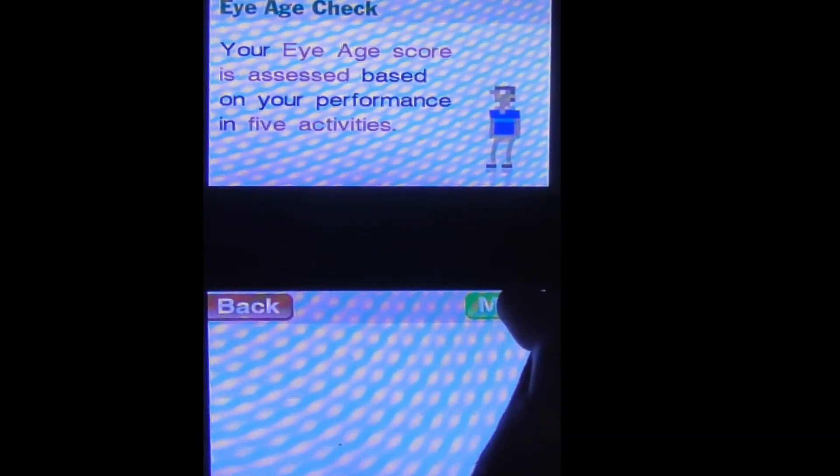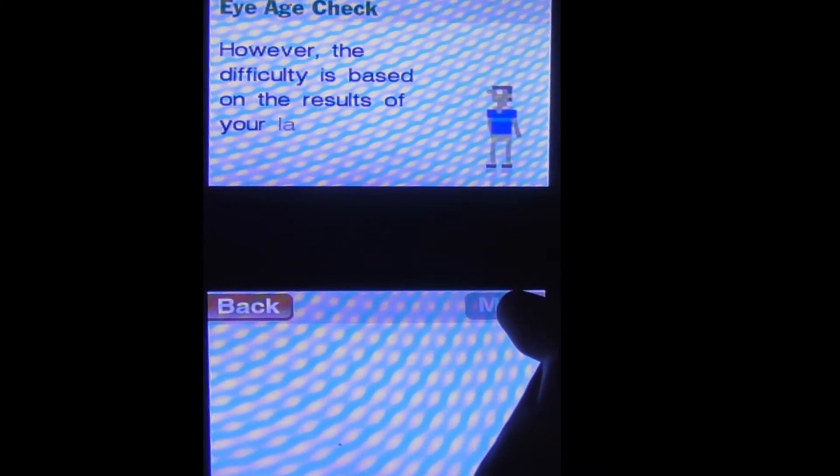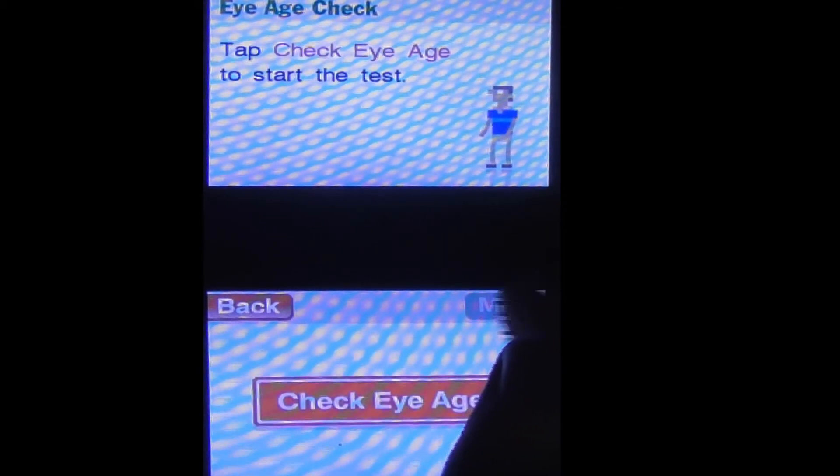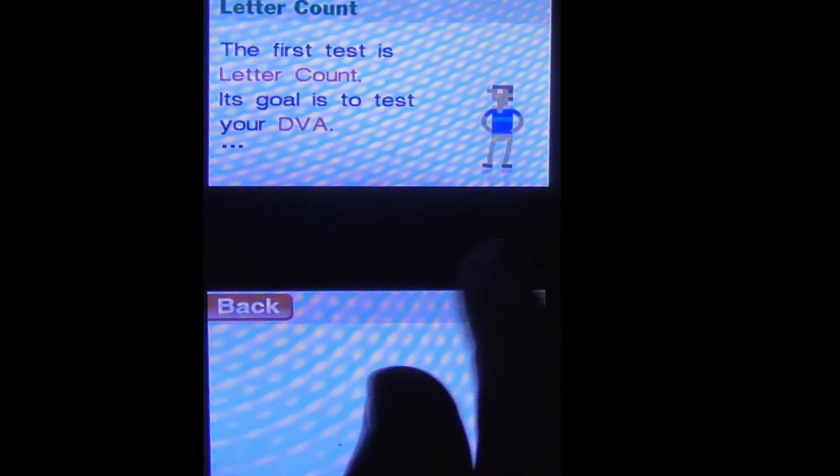Eye age score is assessed based on points in five activities. Difficulty is based on results of the last check. Okay. So which one is this, letter count to the DVA which is... I don't know if it shows that. Maybe we'll show it in options or something. How many X's?